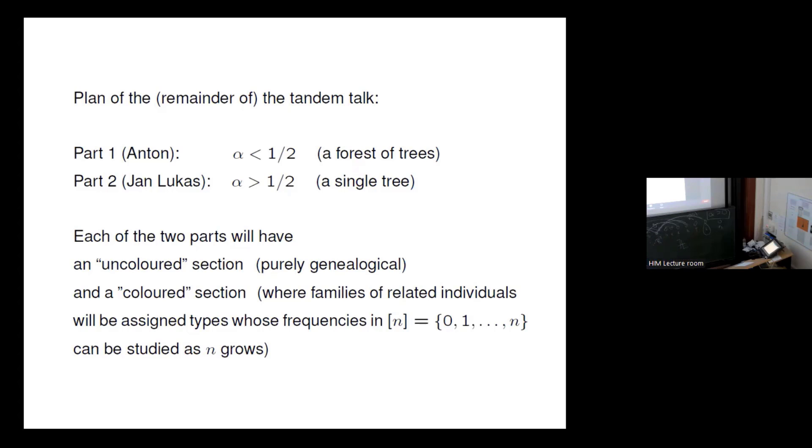The genealogy of the Hammond-Sheffield urn is a single tree if alpha is bigger than one half, and a forest consisting of infinitely many trees if alpha is smaller than one half. And here is the plan of the remainder of the tandem talk. I will speak on the forest part. Jan Lukas will speak on the tree part. The forest part that's already published in the ArXiv. The tree part is the hard part, which we are working on. And we are happy about the input. Actually, there are people here who gave us already very valuable input.